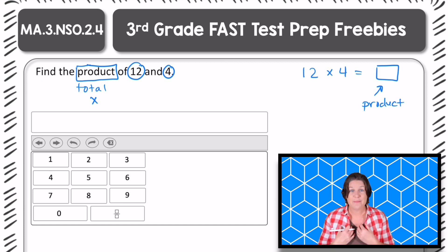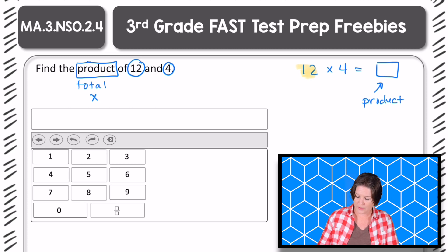The strategy that I'm going to use to solve this problem is to use the distributive property of multiplication. Now the distributive property of multiplication is when you break one factor down. So I need to choose which factor I would like to break down. I could break down the 12 or I could break down the 4. And I think what I'm going to do is actually break down the 12.